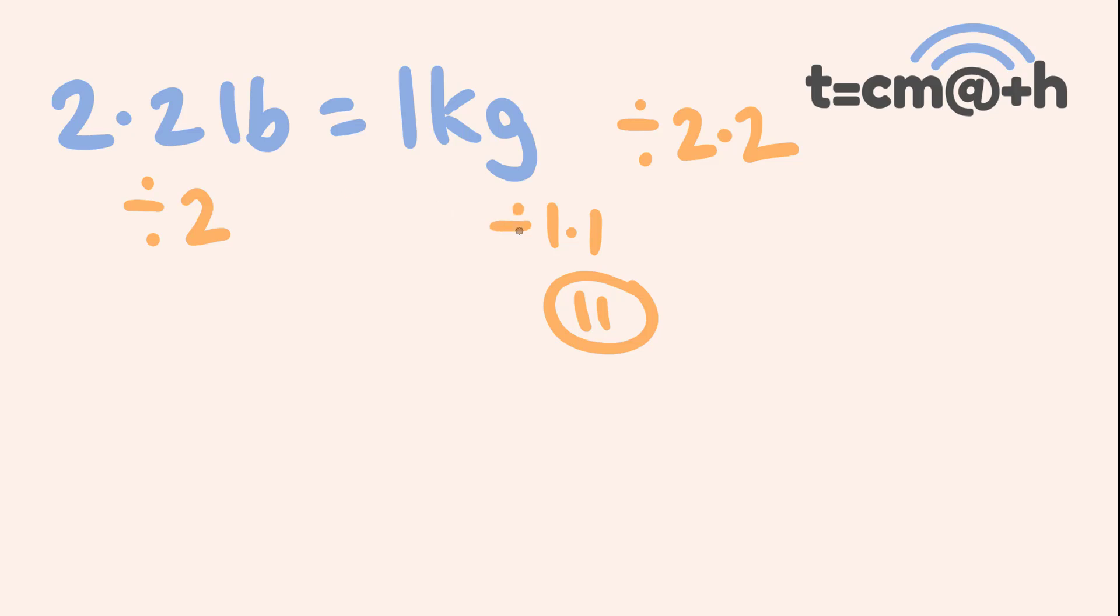So usually what I could do is I could just directly divide by 1.1, but I would rather divide by 11. So I'm going to do sort of an extra step in here. I'm going to divide by 2, multiply my answer by 10, and then divide by 11.